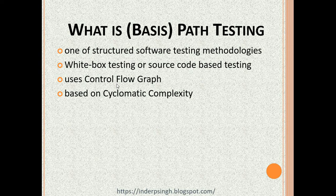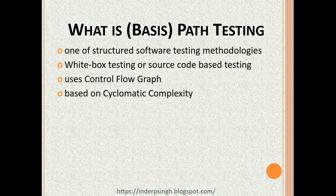You will soon see an example control flow graph. The control flow graph represents the program or algorithm unit. We use the control flow graph to find independent paths of execution using the cyclomatic complexity metric. Cyclomatic complexity is just a number that measures the decision logic in the program unit. Remember that cyclomatic complexity is the minimum number of tests required for the program unit. Path testing then generates tests for each path of execution.